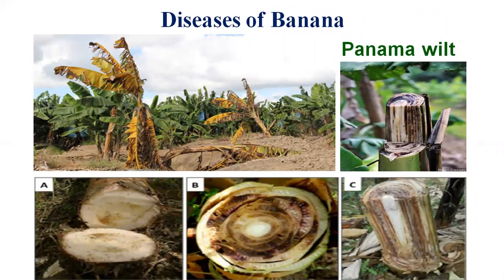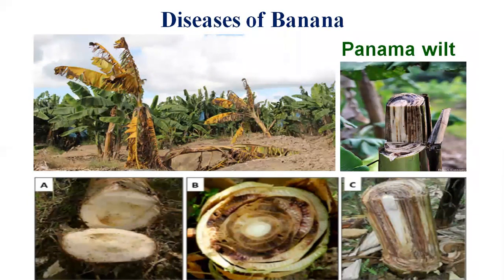The next crop is banana. We are going to start with the important disease of banana, that is Panama wilt. The causal organism is Fusarium oxysporum f.sp. cubense. The same type of wilting conditions are there as compared to other Fusarium wilts. It is called Panama wilt because in the British era, in the 1900s, the rhizomes and suckers were imported from Panama Island, near Costa Rica, between South and North America, to India. That is the origin of this wilt, and that is why it is known as Panama wilt.